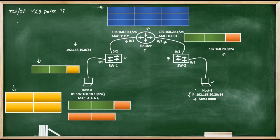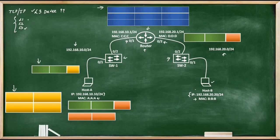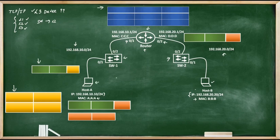Now the question arises: do routers only work at Layer 3? The answer is no — routers operate and understand Layer 1, Layer 2, and also Layer 3 of the TCP/IP model. So why do we call a router a Layer 3 device? We call it a Layer 3 device because it can deal maximum up to Layer 3. On the other hand, a switch is a Layer 2 device because it can deal up to Layer 2. A host or laptop can operate and deal with any layer of the TCP/IP model, from physical to application.